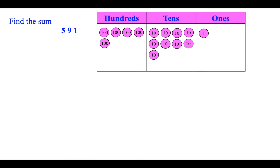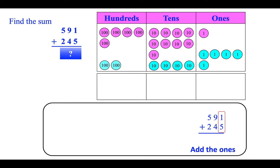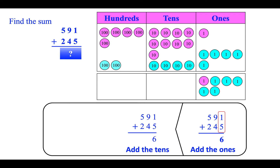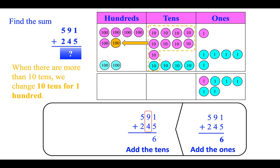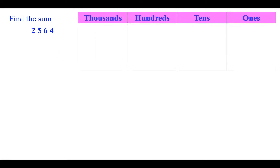Find the sum: five hundred ninety-one plus two hundred forty-five. First we add the ones: one plus five is six. Next we add the tens: nine plus four is thirteen. When there are more than ten tens, we change ten tens for one hundred — we add one hundred to the hundreds place; now we are left with three. Lastly we add the hundreds: one plus five plus two is eight.